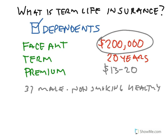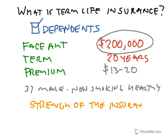A couple of key things when looking at a term life policy: of course, figuring out how much you need, but also take into consideration the financial strength of the insurance company. Because if you're paying them premiums and they're strong, they'll be able to pay your beneficiaries the face amount if something were to happen to you. But if they're a weak insurance company and they go out of business, they're not going to be able to pay.